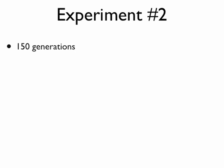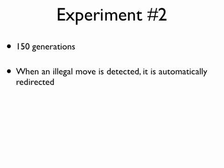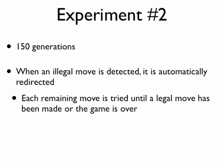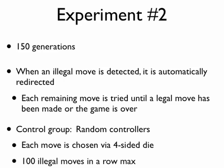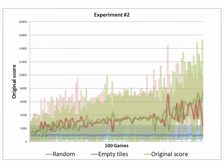For the second experiment, I dropped down to 150 generations and did away with the idea of a maximum limit of illegal moves. Instead of ignoring illegal moves and trying again, the remaining three moves are automatically attempted in an order respecting the original move until one is found to be legal. This effectively forces the controllers to finish every game. The random controller was allowed 100 illegal moves in a row — since it's basically impossible to roll a four-sided die a hundred times and not get each side at least once, the random controllers also finished every game. Out of all experiments, these controllers performed the best, with no significant difference between the two fitness functions.